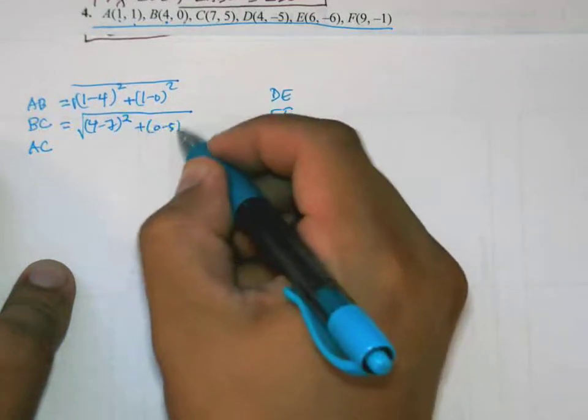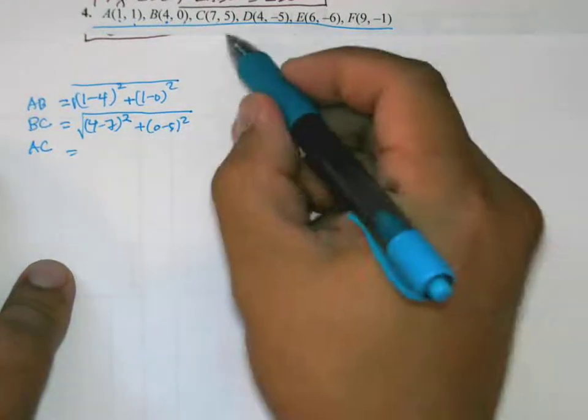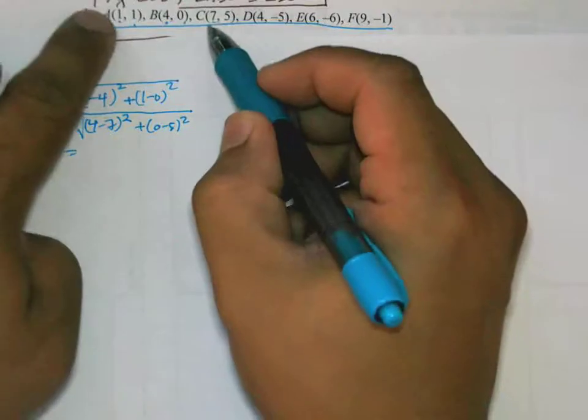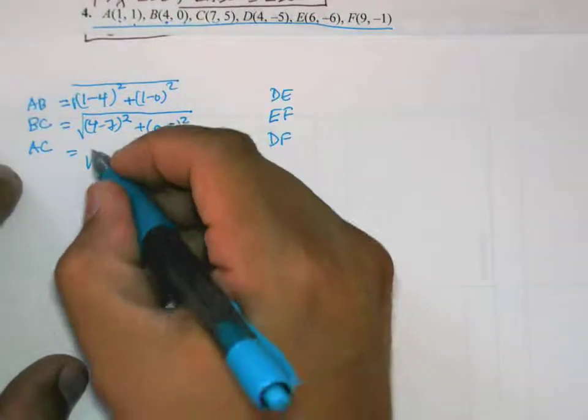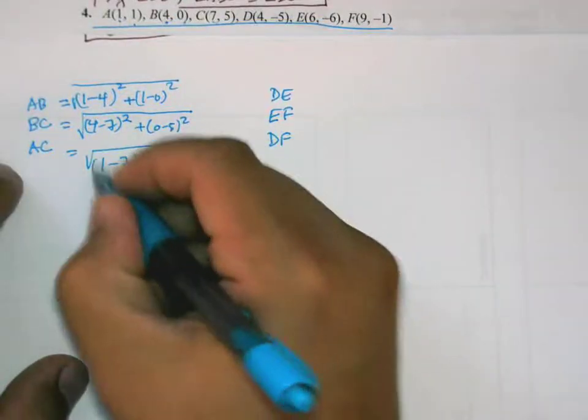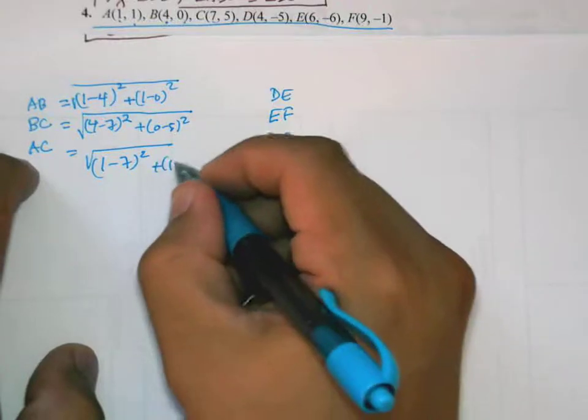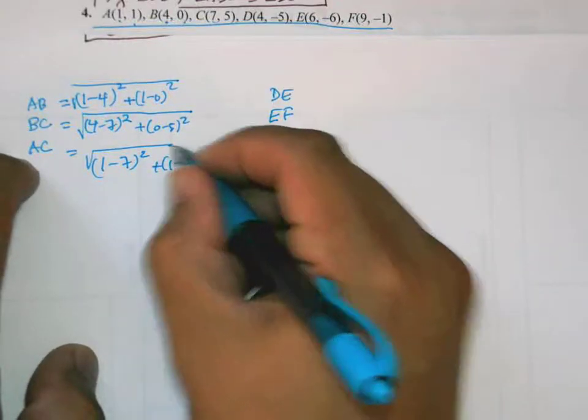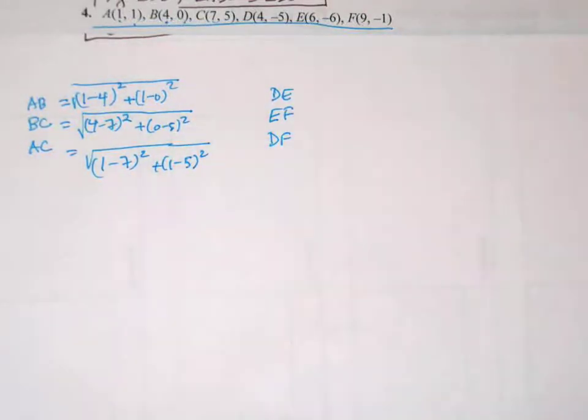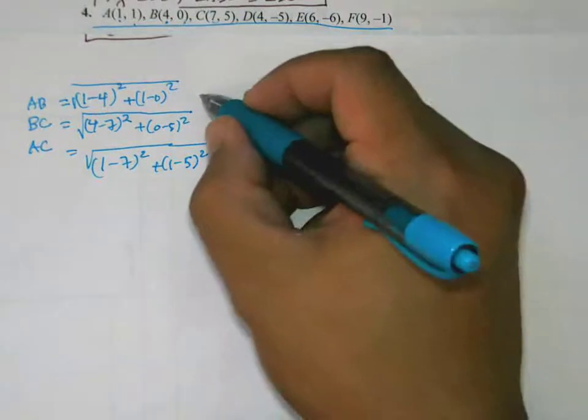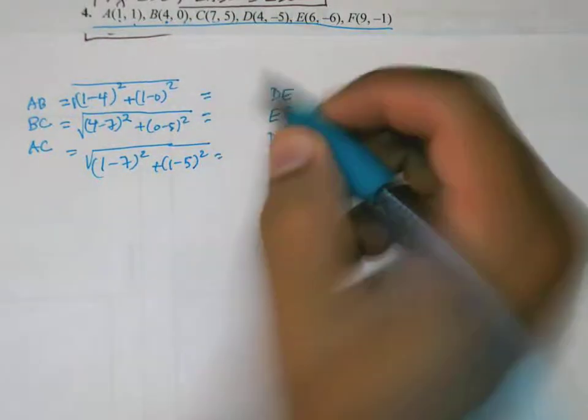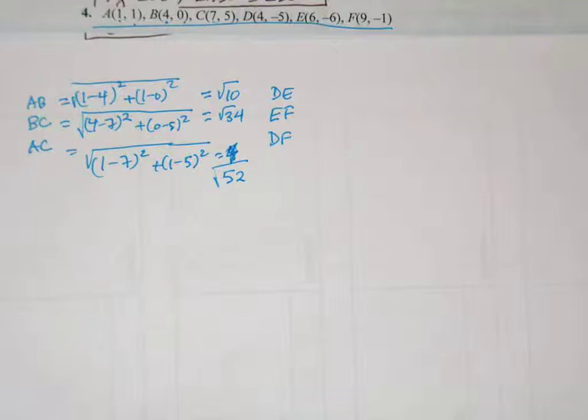AC is √[(1-7)² + (1-5)²]. I'll evaluate these in my calculator: square root of 10, square root of 34, and square root of 52.